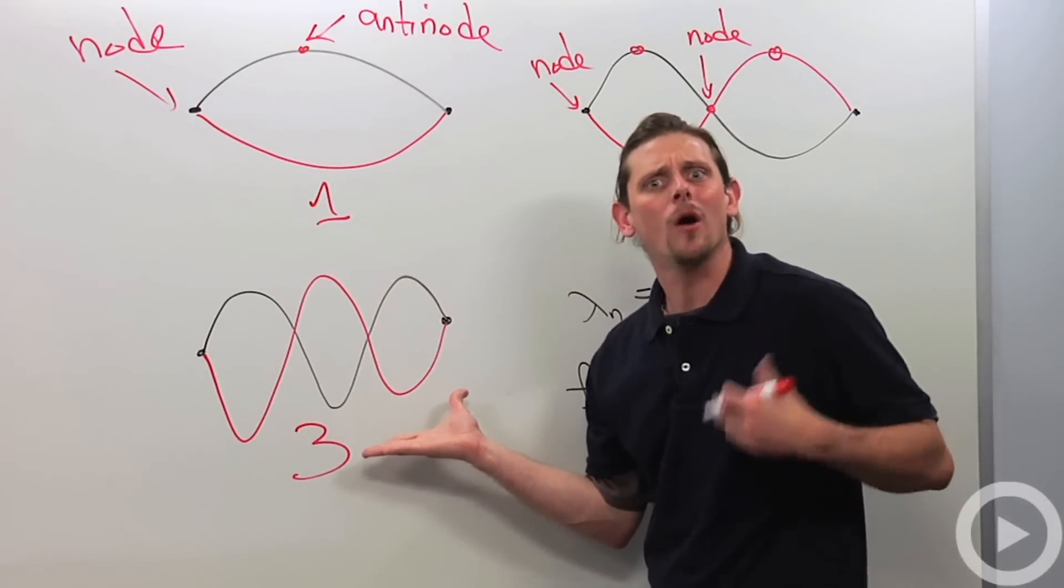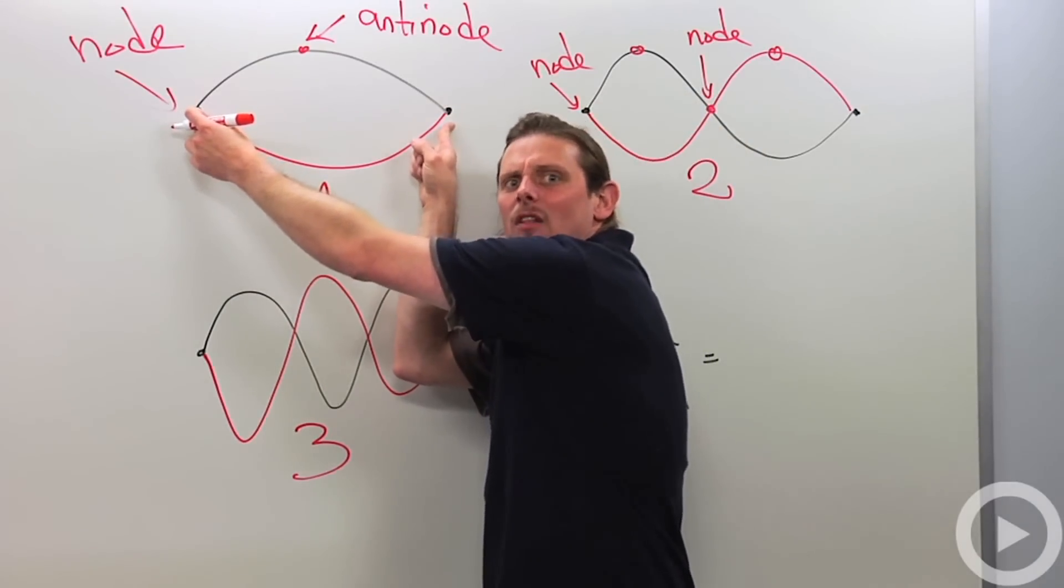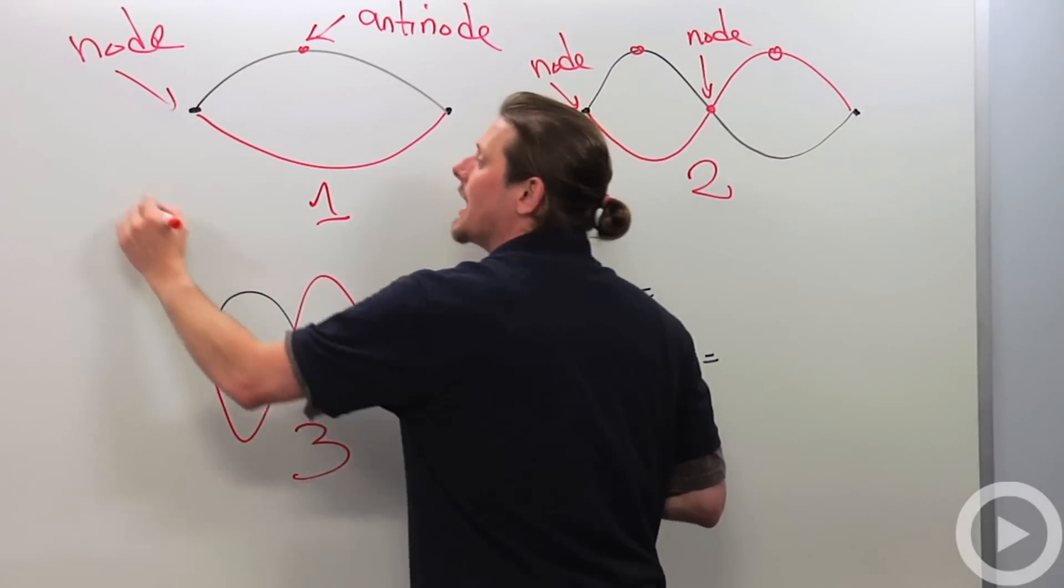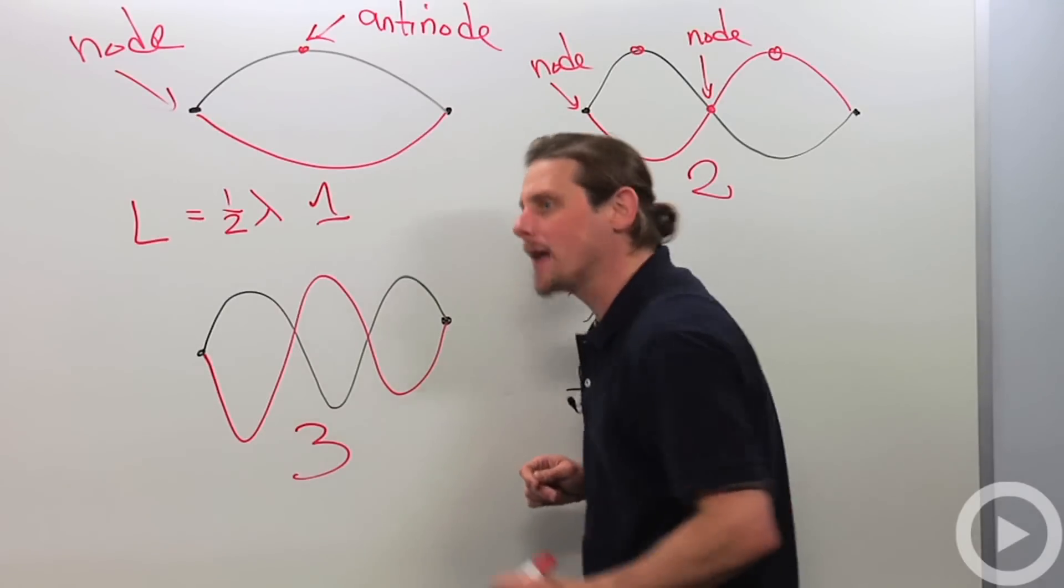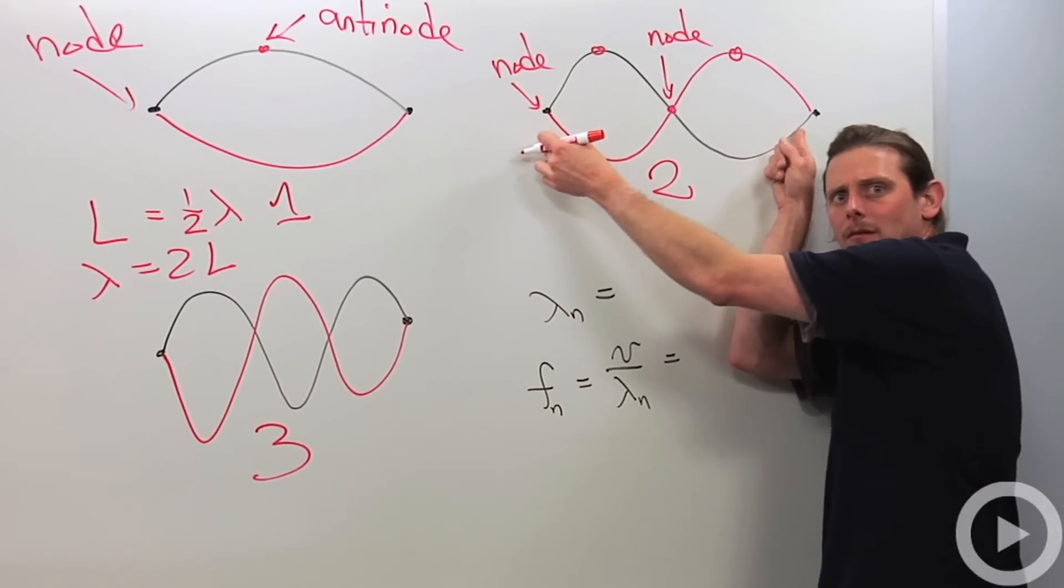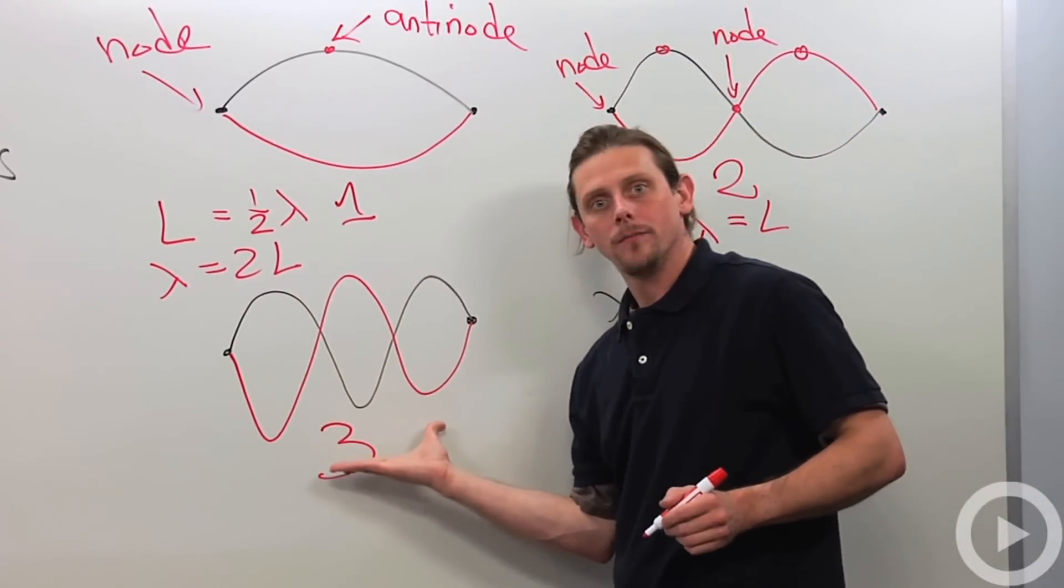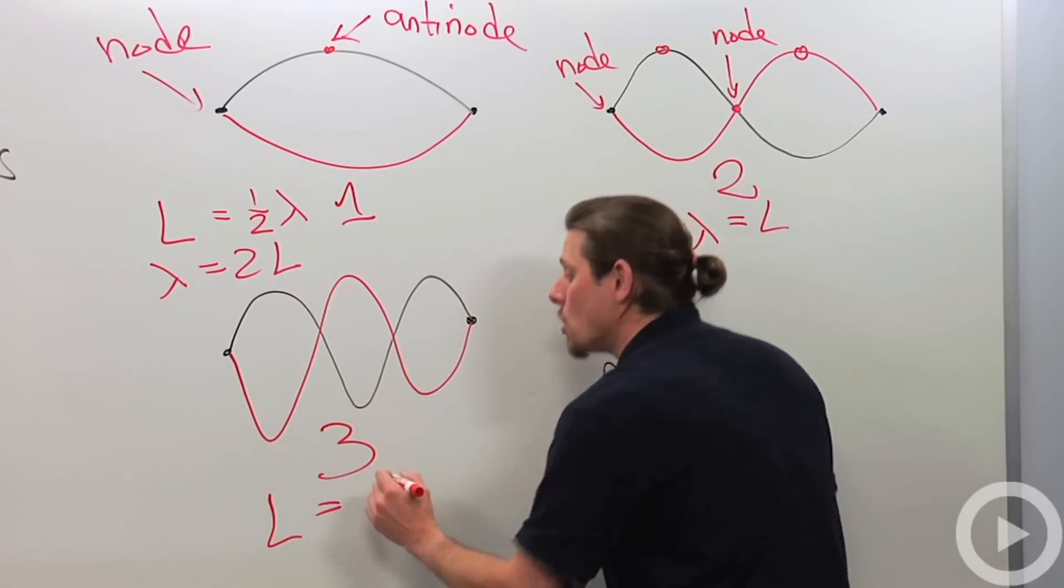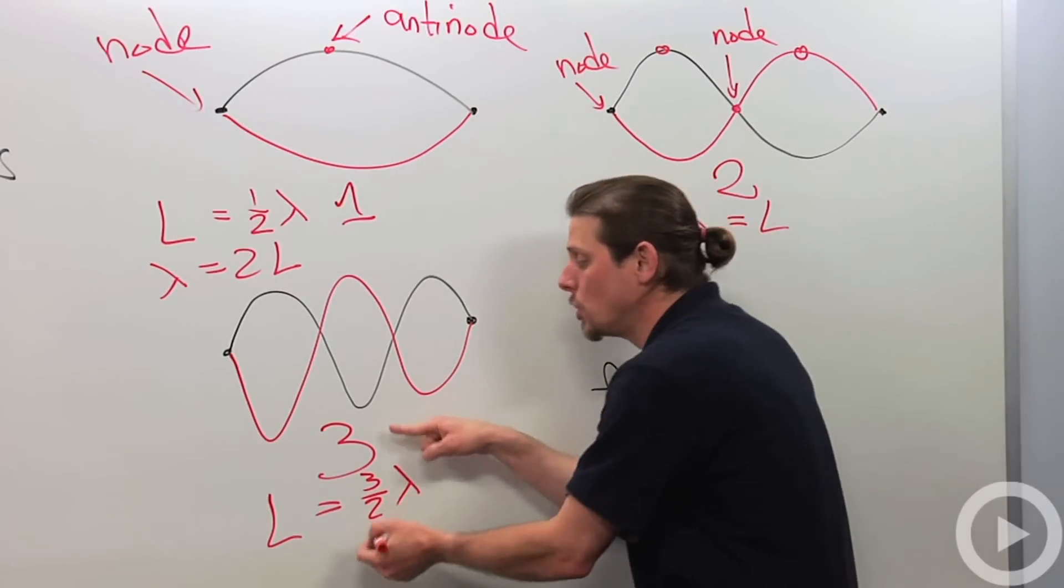Well, in this case, this is only half the wavelength because the whole wave would go like that. So that means that L is one half of the wavelength. So the wavelength will be two L. What about in this case? Well, this is a wavelength. So we'll just say lambda equals L and be done with it. What about here? Well, here the length L is a wavelength and a half. So it'll be three halves wavelength. And that means the wavelength will be two thirds L.